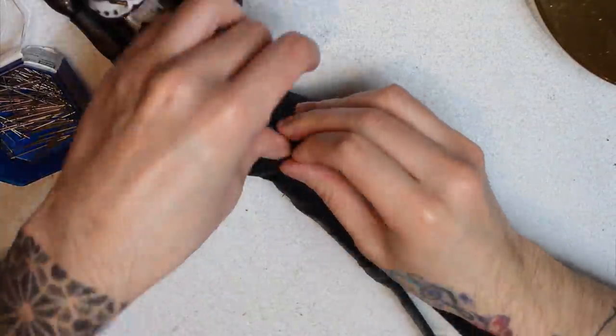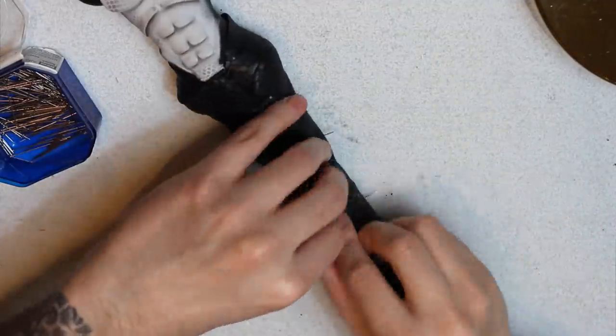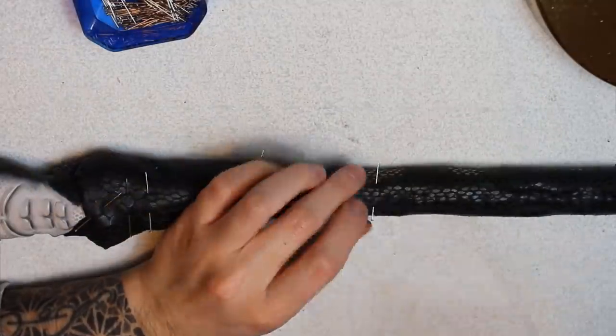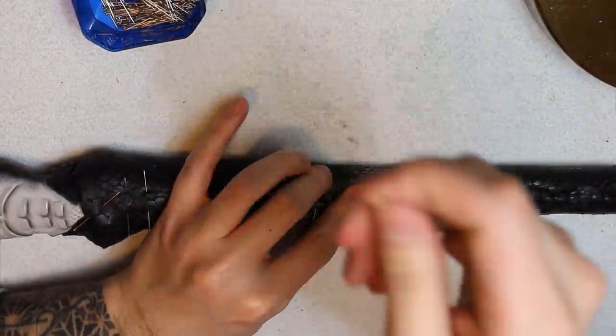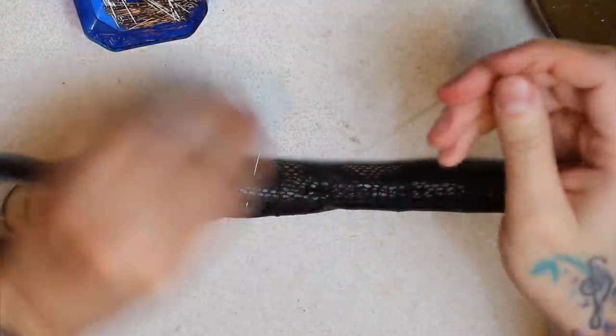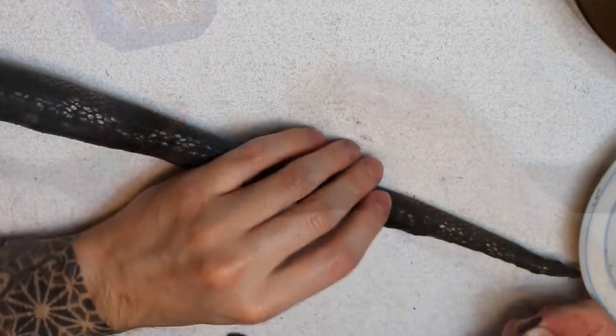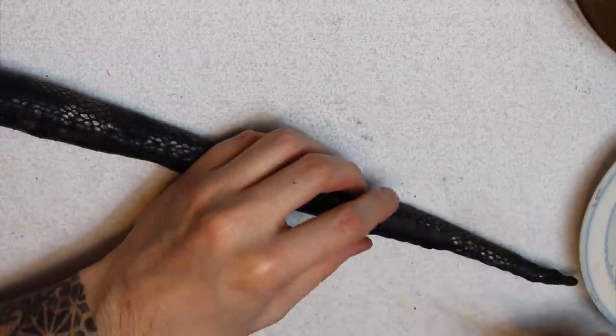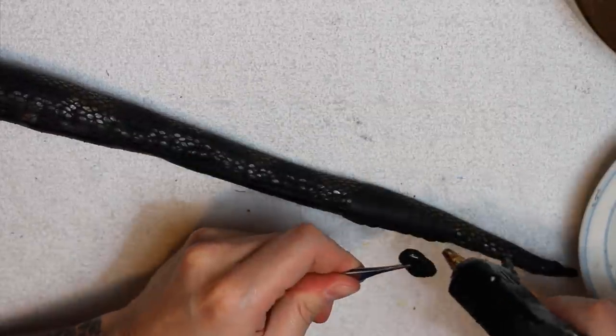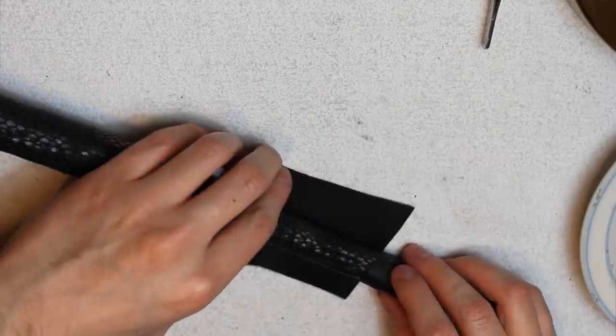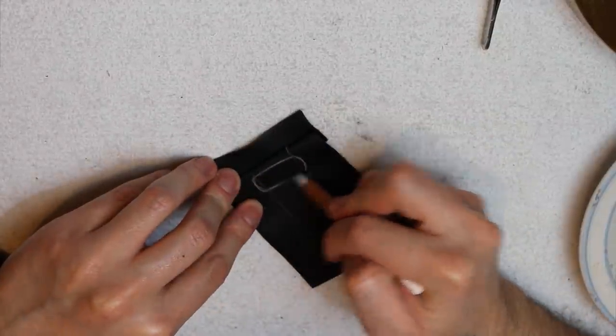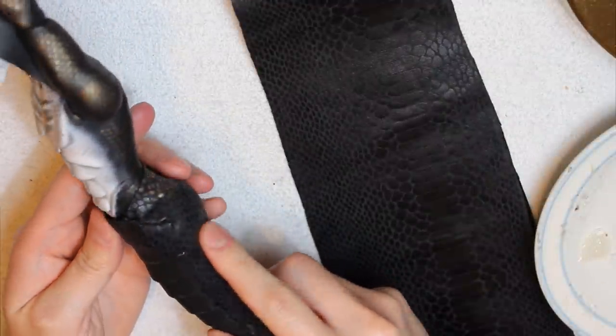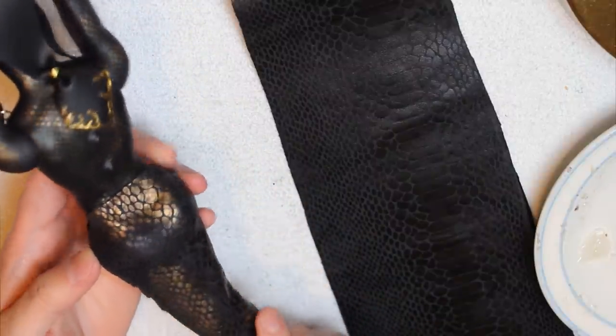To cover up my stitches, I'm using fake leather to recreate the belly or ventral scales. And this will also add so much more to the design. To make the ventral scales, I trace the body on the leather, draw them, cut them individually, and glue them.